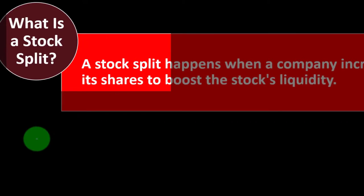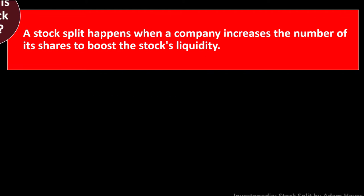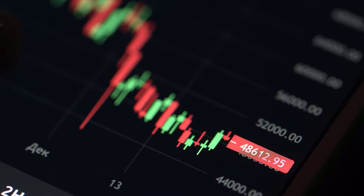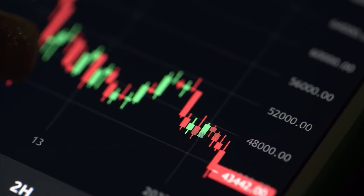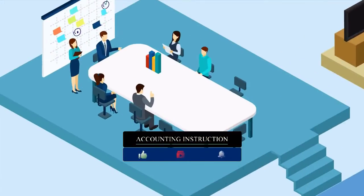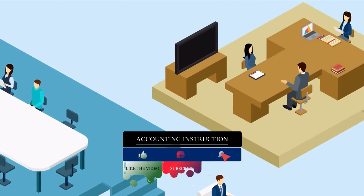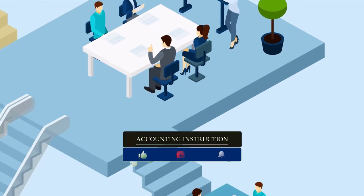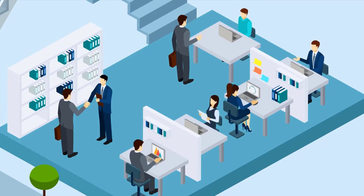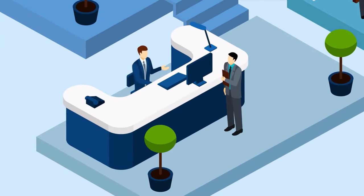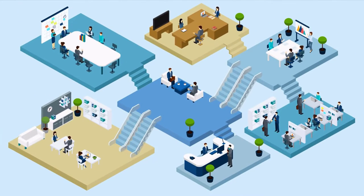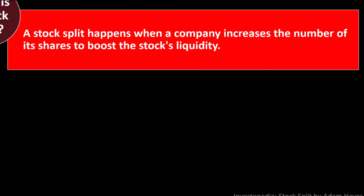What is a stock split? A stock split happens when a company increases the number of its shares to boost the stock's liquidity. Stocks are called equities because from an accounting standpoint, equity represents the book value — the ownership value of the company. The accounting equation is: assets equal liabilities plus equity, which can be rewritten as assets minus liabilities equals equity, essentially net assets. The stock price should represent what the market feels is the equity value, the ownership interest in the company.